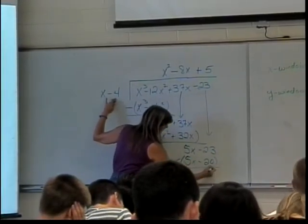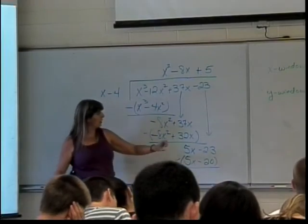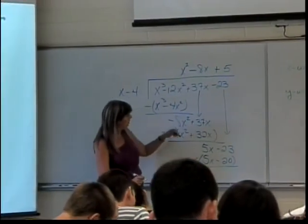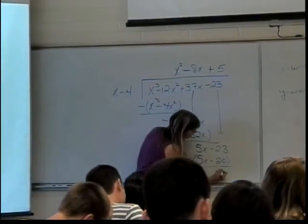When I subtract, I end up with 5X minus 5X. Zero. That's good. And negative 23 minus a negative 20, which is plus 20. So negative 3.